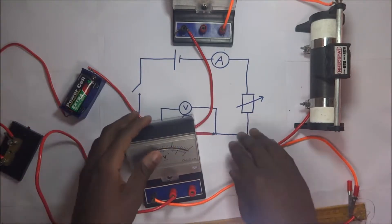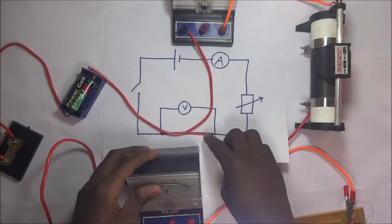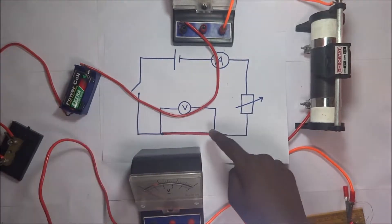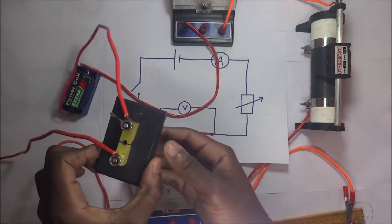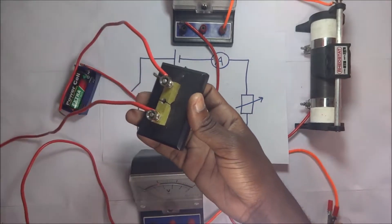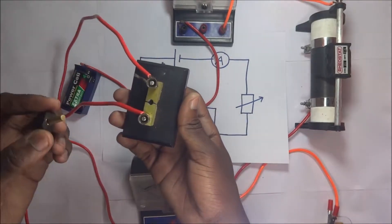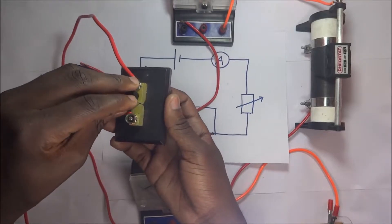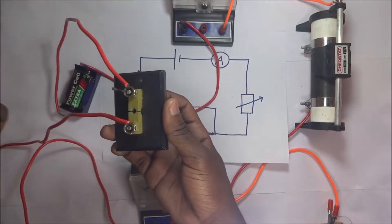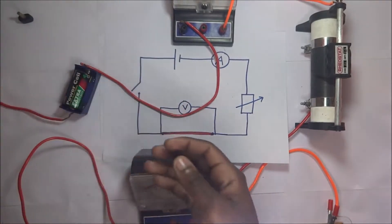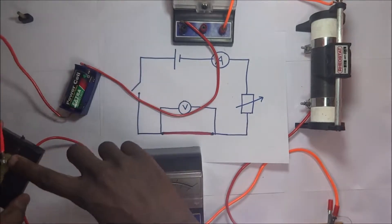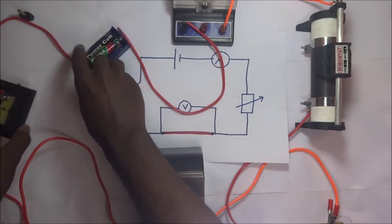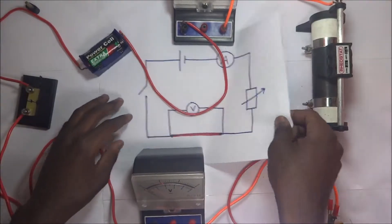Looking at our circuit diagram, this continues up to the switch. This right here is our switch. If we had to complete the circuit or close the switch, we simply take this and close it there. For now, it is still open. The other terminal of the switch is going to lead back to the dry cell, just like the circuit diagram shows.